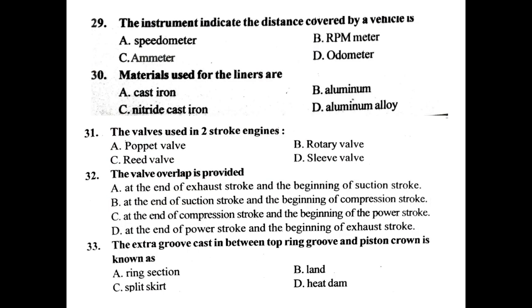The instrument that indicates the distance covered by a vehicle is the odometer. Material used for liners is cast iron. Valves used in a 2-stroke engine are reed valves.